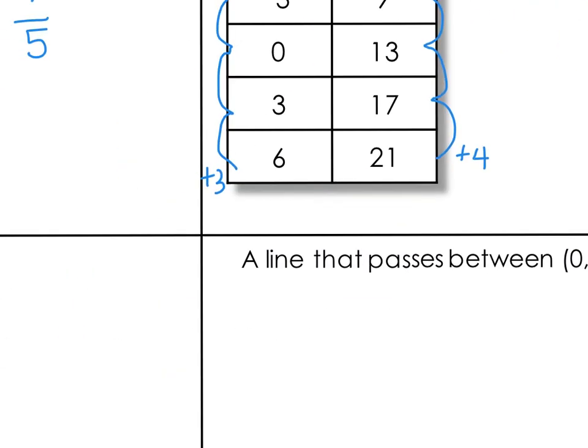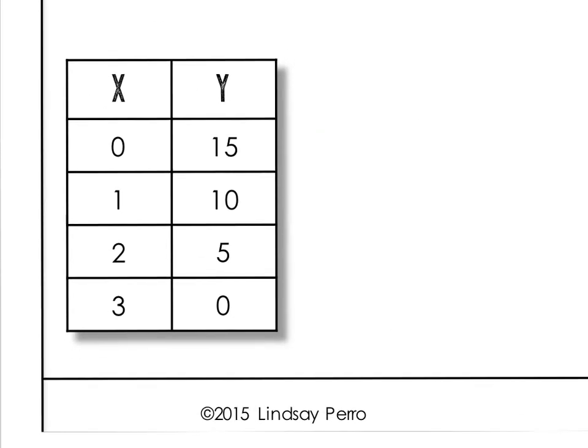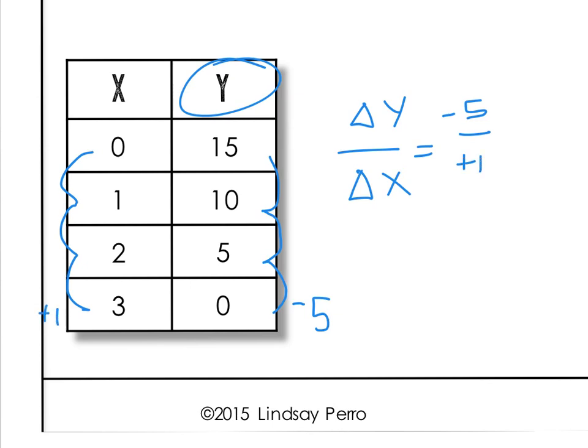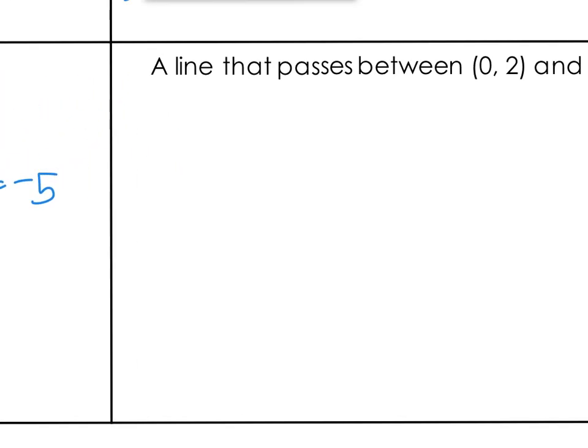Next problem, another table. Same thing. I encourage you to write change in Y over change in X every time so that you remember to look at Y first. So from 15 to 10, I have to subtract five. Minus five is five. Minus five is zero. So I have a consistent or constant rate of change. My change in Y is negative five. And my change in X, I'm going up one, up one, up one, so I've got positive one. And so negative five over one is negative five. Again, simplify your slope.